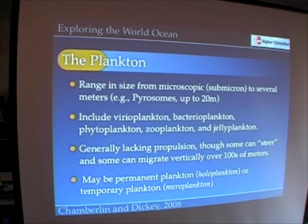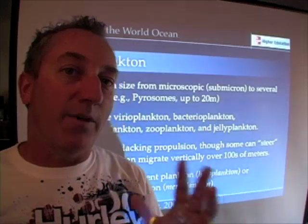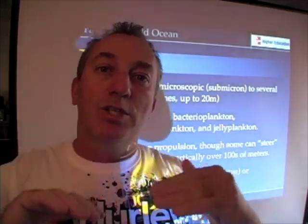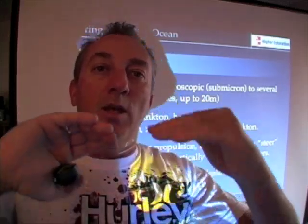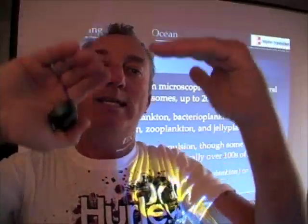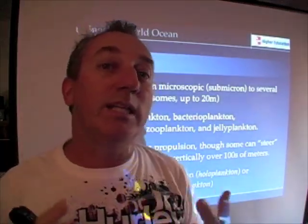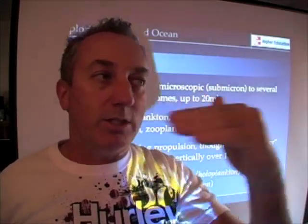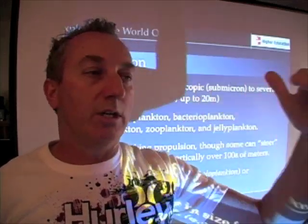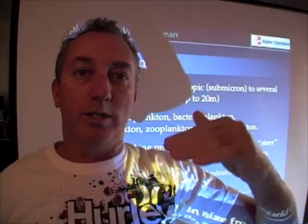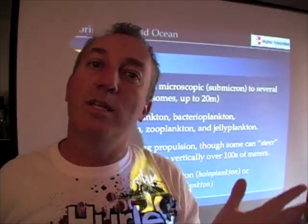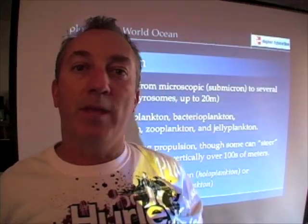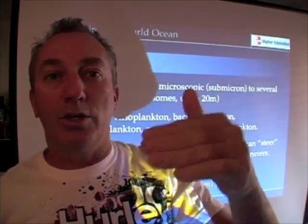Usually plankton lack any means of propulsion, though we have to fudge our definitions a bit, because many forms including phytoplankton can actually migrate or steer with currents, or alter their buoyancy to move upward or downward in the water column by several hundred meters. By altering their position, they can catch different currents. It's thought that larval forms of corals, for example, use this buoyancy change to ride a current out and another current back in to find their home again.